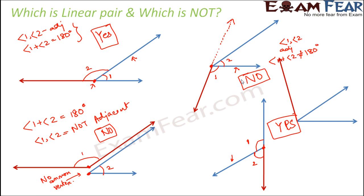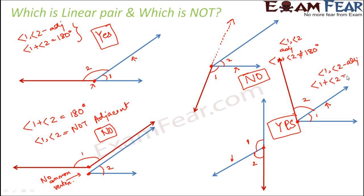In the last example, angle one and angle two are adjacent due to their common vertex, common arm, and no common interior points. But their sum is not equal to 180 degrees — it is distinctly an obtuse angle, which is less than 180 degrees. Therefore, this pair also does not form a linear pair. This is how you determine whether two angles form a linear pair or not.